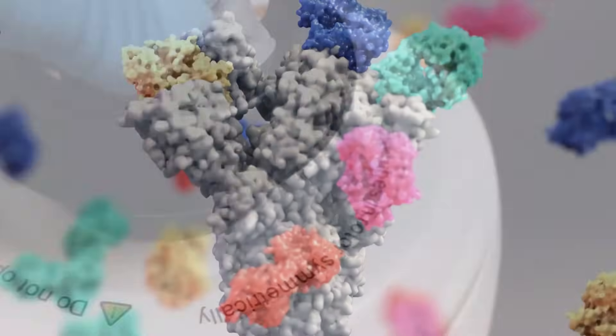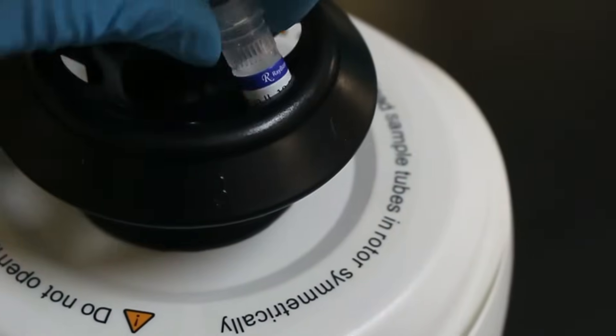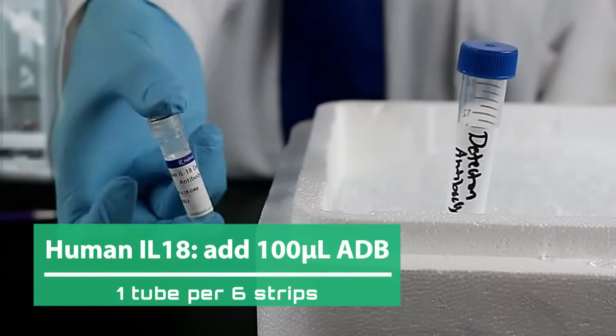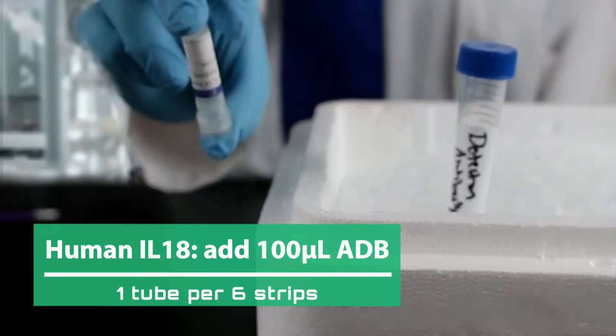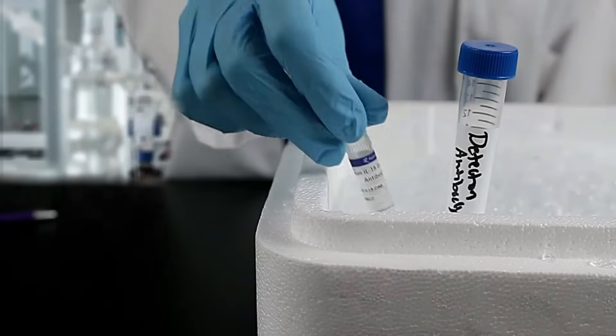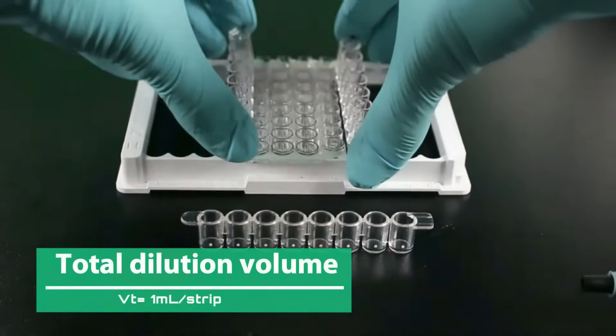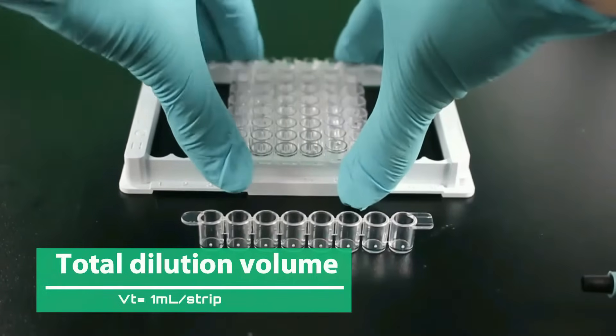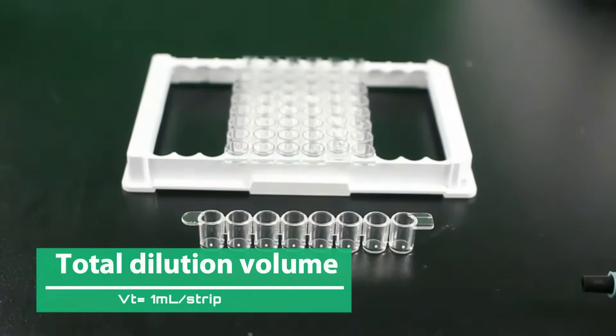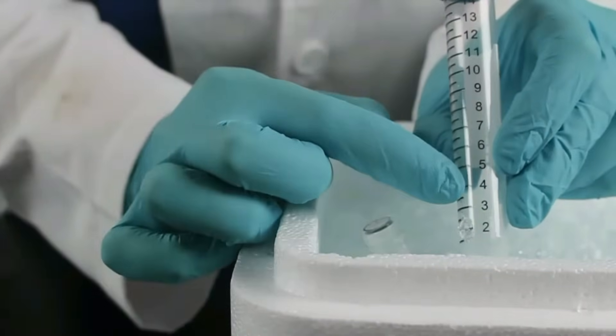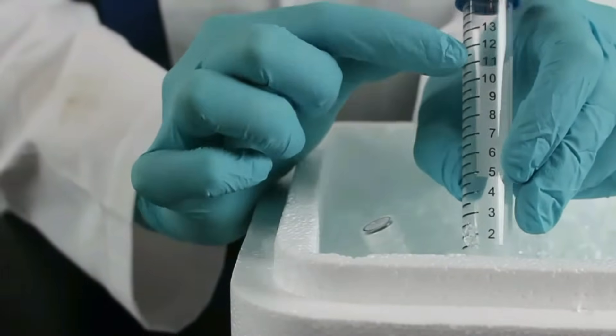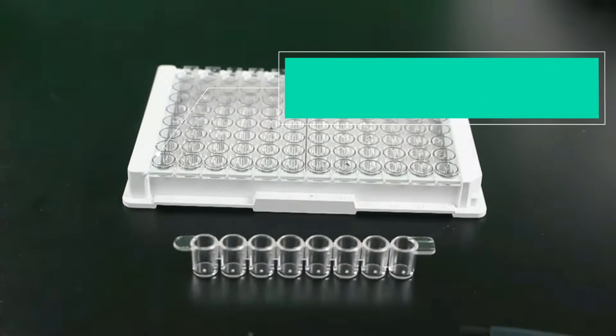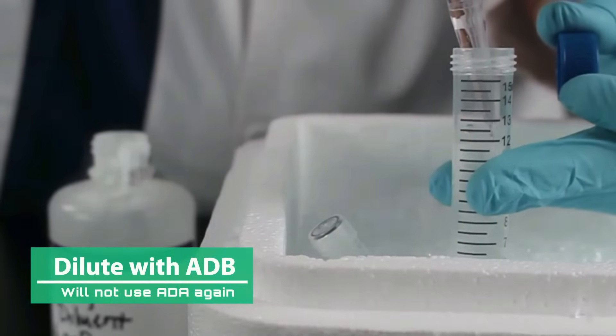To prepare the detection antibody, always spin the volume down first, then add 100 microliters of ADB to the vial. One tube is enough for six strips. We are using a full plate, so go ahead and reconstitute both. The final concentration of detection antibody is target specific, so the total volume needed for all targets is calculated as one milliliter per strip. If you are using four strips, it's four milliliters. Six strips is six milliliters and 12 strips is 12 milliliters. Because we are using a full plate, the total volume used will be 12 milliliters.